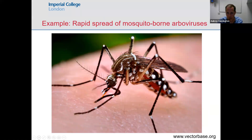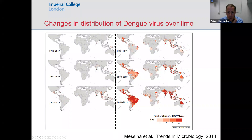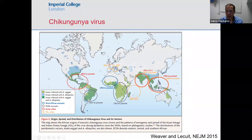Some vector-borne diseases are transmitted by the Aedes mosquito. Dengue is a great example: you can see from the maps the distribution of Dengue virus changing over time from 1980, where it was predominantly in Southeast Asia, then spreading rapidly into South America. Chikungunya virus causes a similar fever, arthralgia, and rash syndrome, and has followed a similar pattern, emerging most recently in South America where it's become quite common.